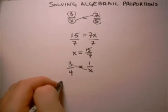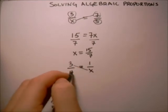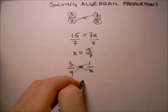We'll cross-multiply here and we'll get 3x, and then we'll multiply across here and that equals 4.